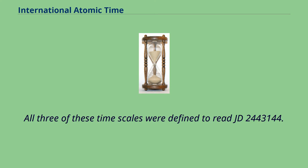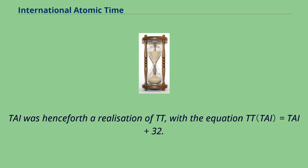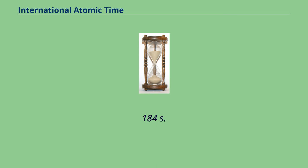All three of these time scales were defined to read JD 2,443,144.5003725 exactly at that instant. TAI was henceforth a realization of TT, with the equation TT equals TAI plus 32.184 seconds.